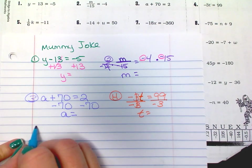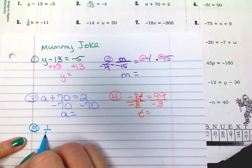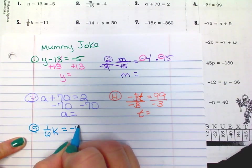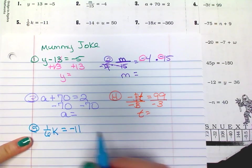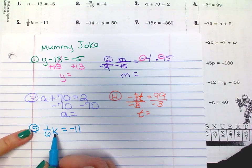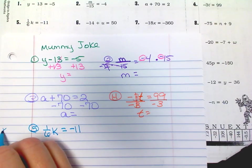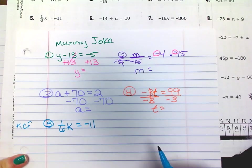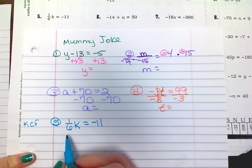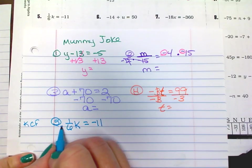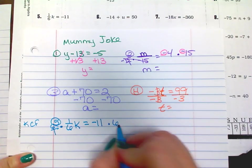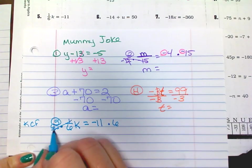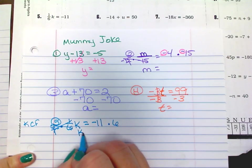Number five. 1/6k equals negative 11. This is a fraction, but it's the same thing — it's multiplying. So we would normally divide. But remember with fractions: keep, change, flip. When you're dividing fractions, keep, change, flip — now we're multiplying by the reciprocal. So that cancels out, and k equals the answer.